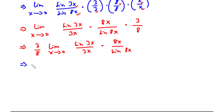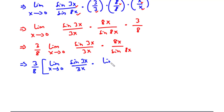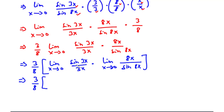We split the limit into (3/8) times the limit as x approaches 0 of sine 3x over 3x, multiplied by the limit as x approaches 0 of 8x over sine 8x. The limit of sine 3x over 3x is 1, and 8x over sine 8x is 1 over 1, which is also 1. So 3 over 8 times 1 times 1 equals 3 over 8.